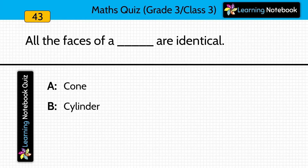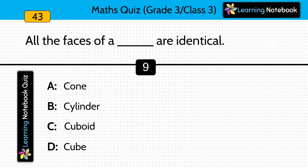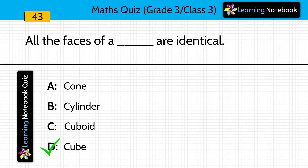All the faces of a dash are identical. Options: cone, cylinder, cuboid, or cube? Answer is cube — all the faces of a cube are identical. The best example of a cube is a dice, which you use to play snakes and ladders or Ludo.